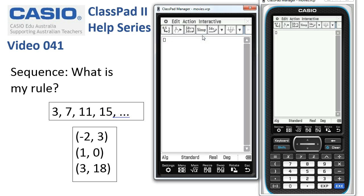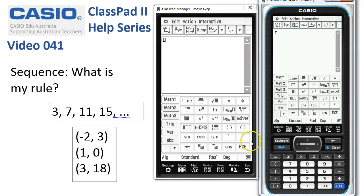We're going to start in main. To start off with, we need to type this in as a list. So we're going to get the keyboard up and choose some curly brackets to start our list off. And here we go, 3, 7, 11, and 15.